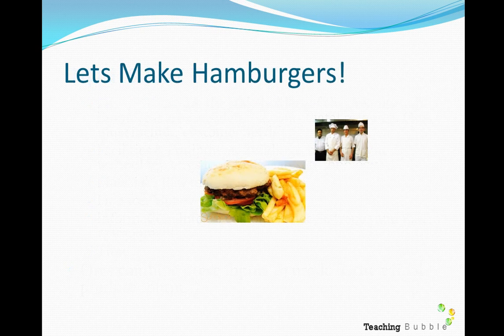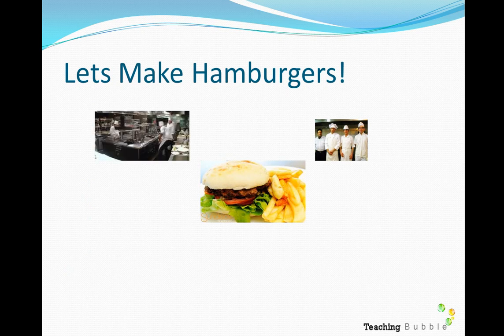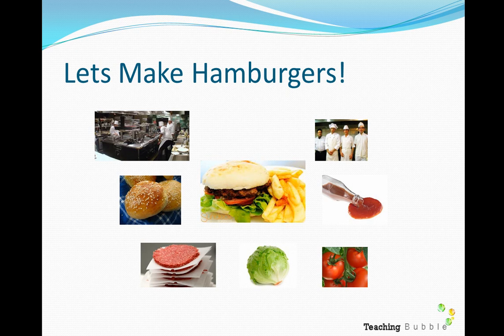Let's use hamburgers as an example. To make a hamburger, we need people — employees to cook, cut, and serve. Then we have our facilities and equipment: the kitchen, cookers, knives, utensils, and the facility to actually produce and serve the food.